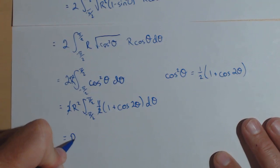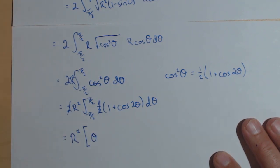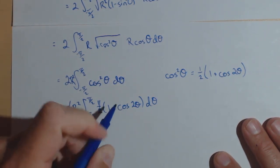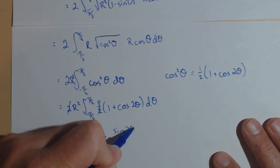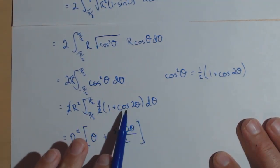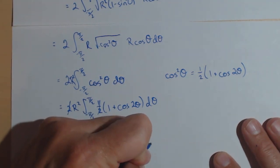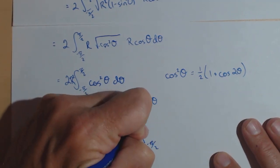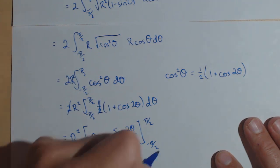Now we have r squared times the integral, done piece by piece. The anti-derivative of 1 is theta. The anti-derivative of cosine of 2 theta is sine of 2 theta over 2 — this comes from the chain rule in reverse: dividing by 2 rather than multiplying. You may want to verify this with a u-substitution to see where it comes from.